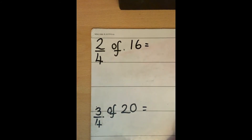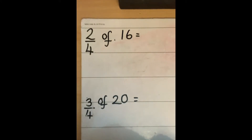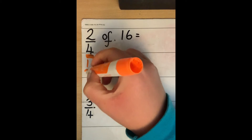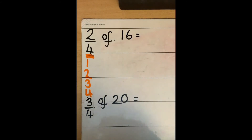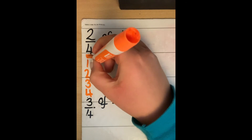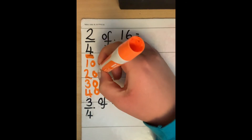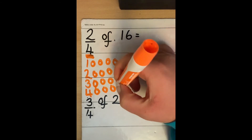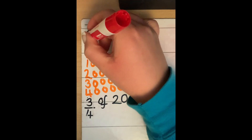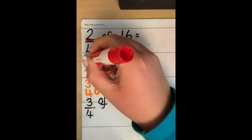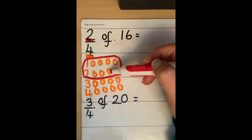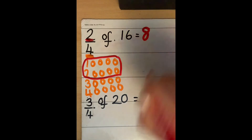Let's have a look at some more examples. This one we are finding 2 quarters of 16. Just like before, we look at the denominator first, which tells us we need 4 groups. We then need to share our 16 equally between those 4 groups, counting out all 16. Again we need to look at our numerator — our numerator is 2 — so we need to count 2 groups. That gives us 8. So 2 quarters of 16 is 8.